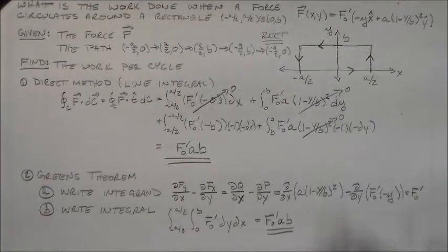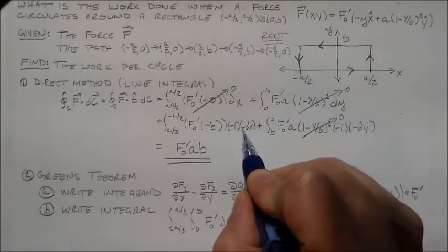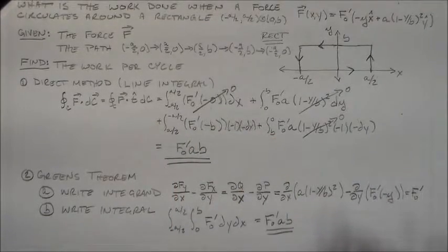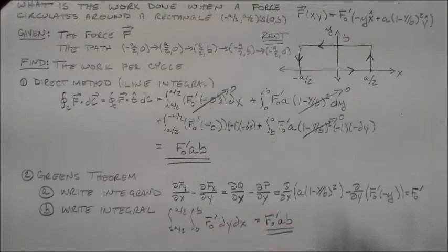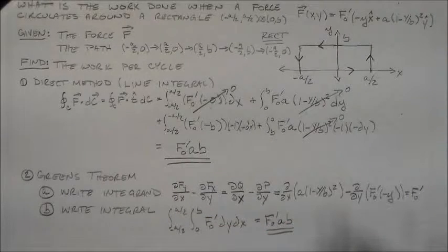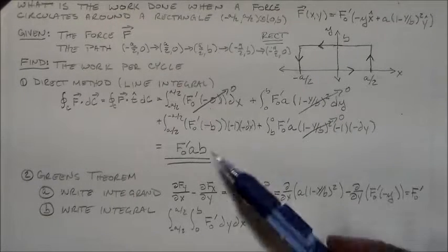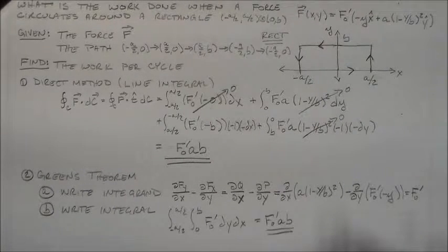All right, so it does work. So the problem here was I had 1, 2, 3, 4 minus signs, not 3, so with 4 minus signs, I end up with F naught prime A B. All right, so excellent. So you see that's why you like to be able to do things two ways, is you want to see which ones agree and which ones don't agree.